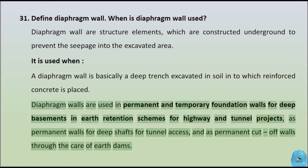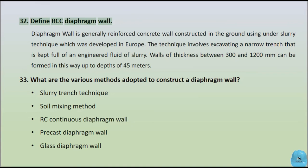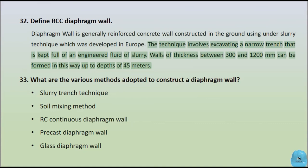Question 29: Define RCC Diaphragm wall. Diaphragm wall is generally a reinforced concrete wall constructed in the ground using an under-slurry technique which was developed in Europe. The technique involves excavating a narrow trench that is kept full of an engineered fluid or slurry. Walls of thickness between 300 and 1,200 millimeters can be formed in this way up to depths of 45 meters.